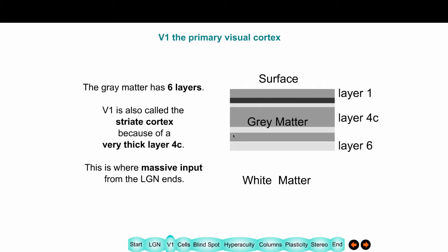The gray matter has layers in it. All you need to remember is that layer one is on top, layer six is at the bottom, and layer 4C is in the middle. In this part of the brain, layer 4C is very thick — that's why it's called the striate cortex, because it makes a big striation. It's thick because it receives this massive input from the eye through the LGN. You can tell where V1 stops because this thickness suddenly becomes thinner — anatomists have known for a long time where V1 lay based on how thick this layer was.